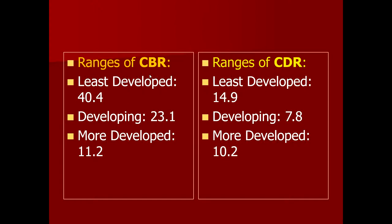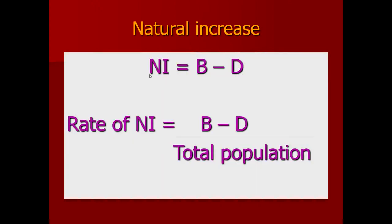How do we calculate natural increase in population? The natural increase in population is calculated by subtracting deaths from births. If the population in a defined geographical area is increasing because of more births and fewer deaths, then subtracting deaths from births gives us the natural increase. If you want to calculate the rate of natural increase, you calculate births minus deaths divided by the total population into 1,000.